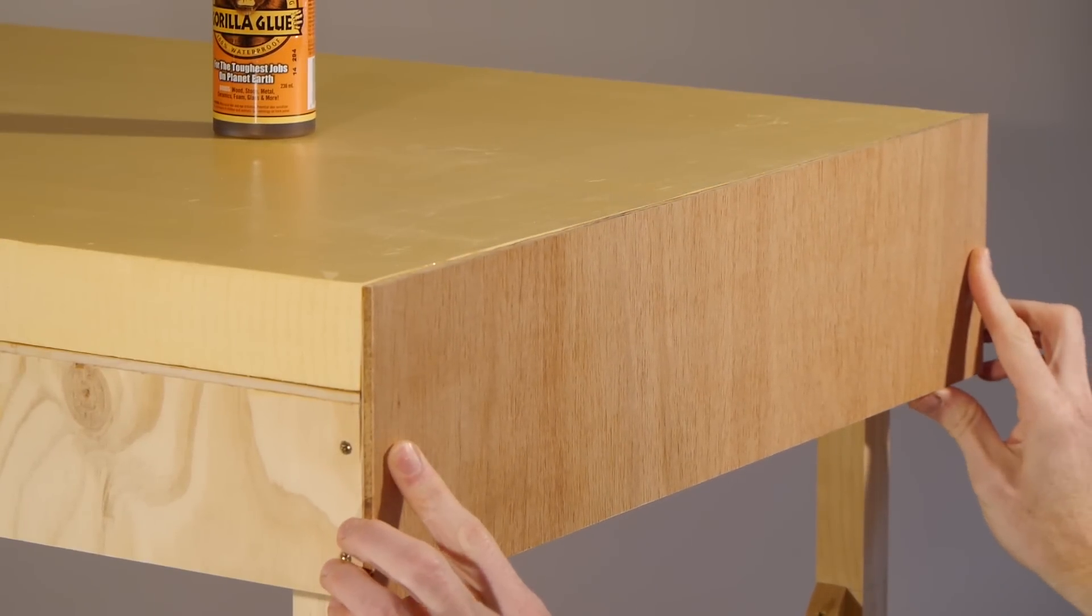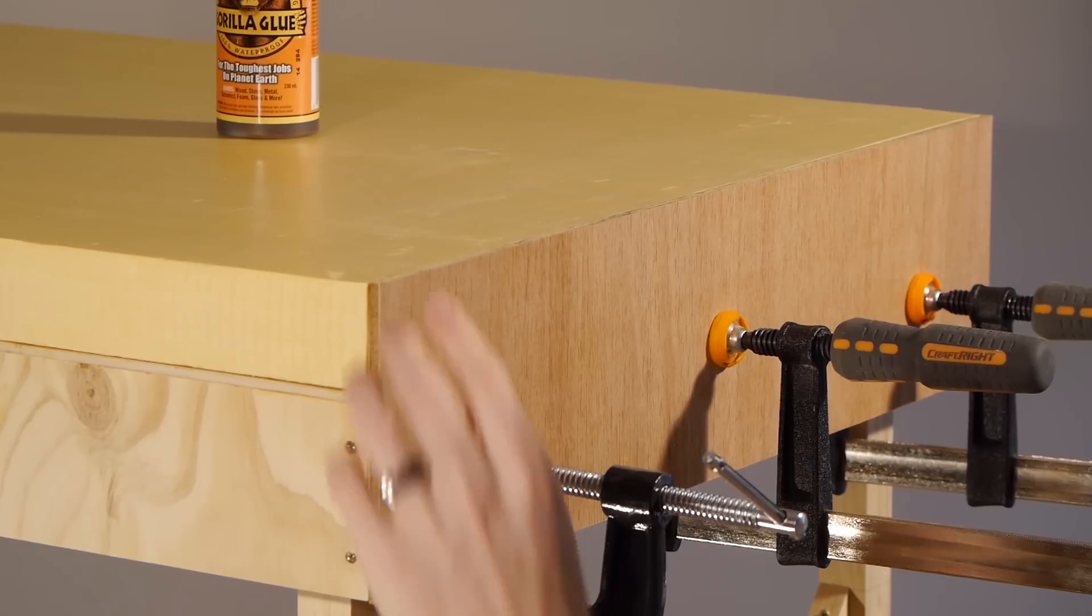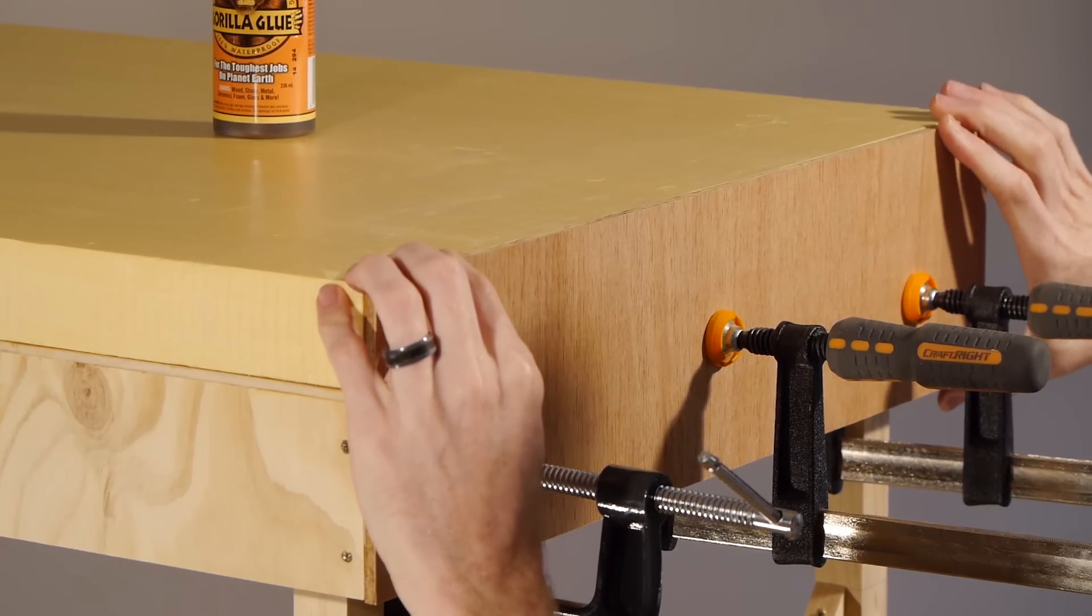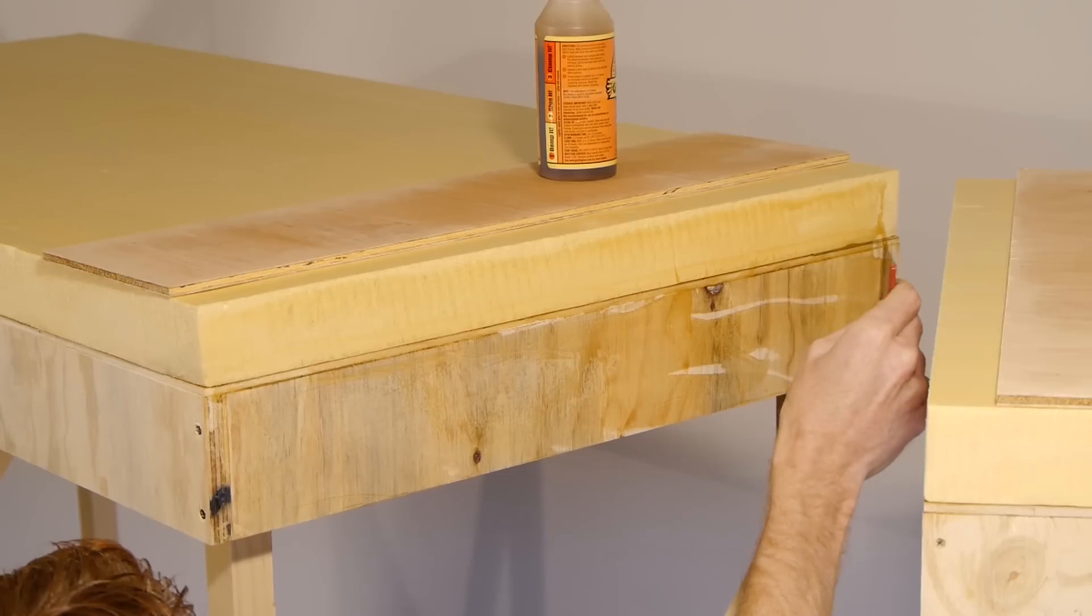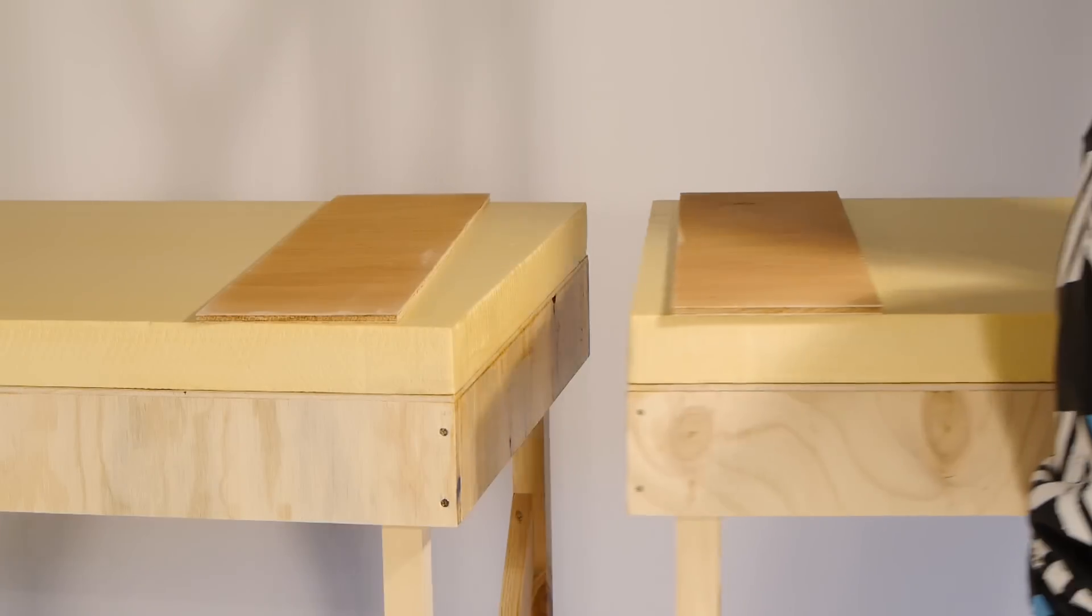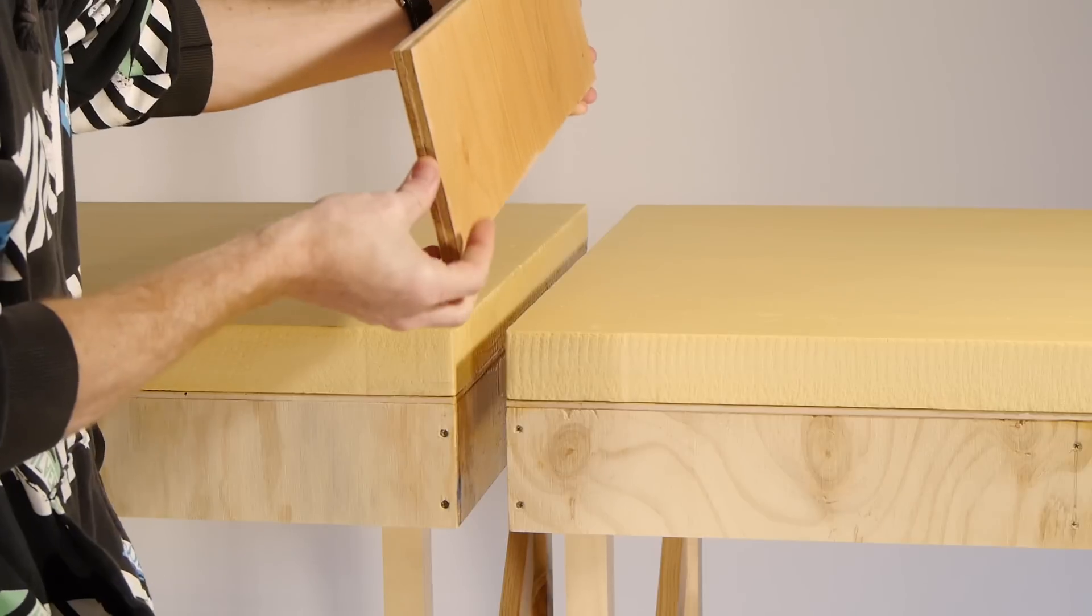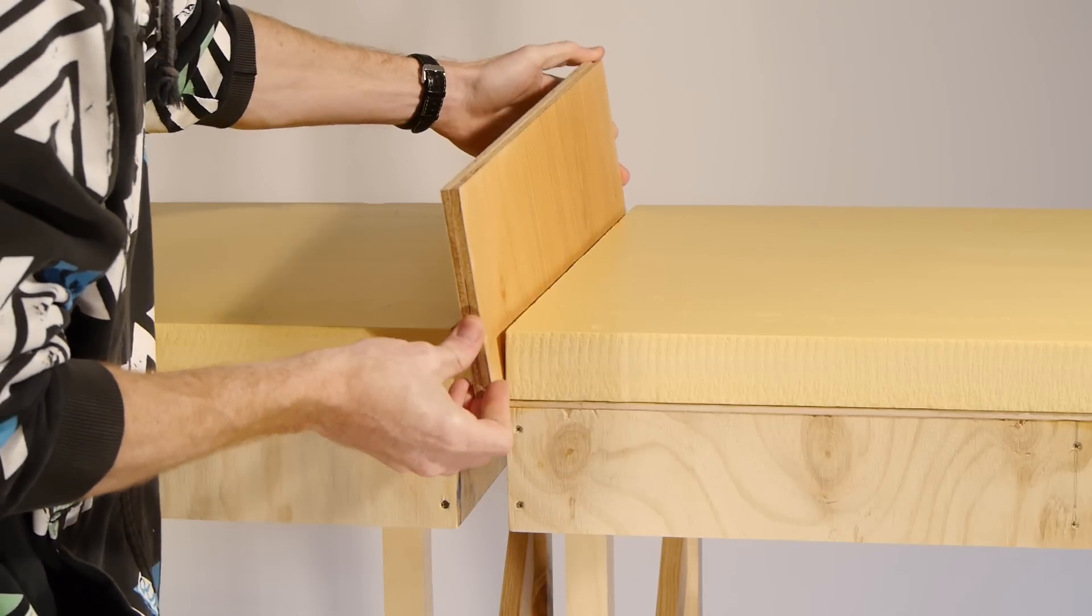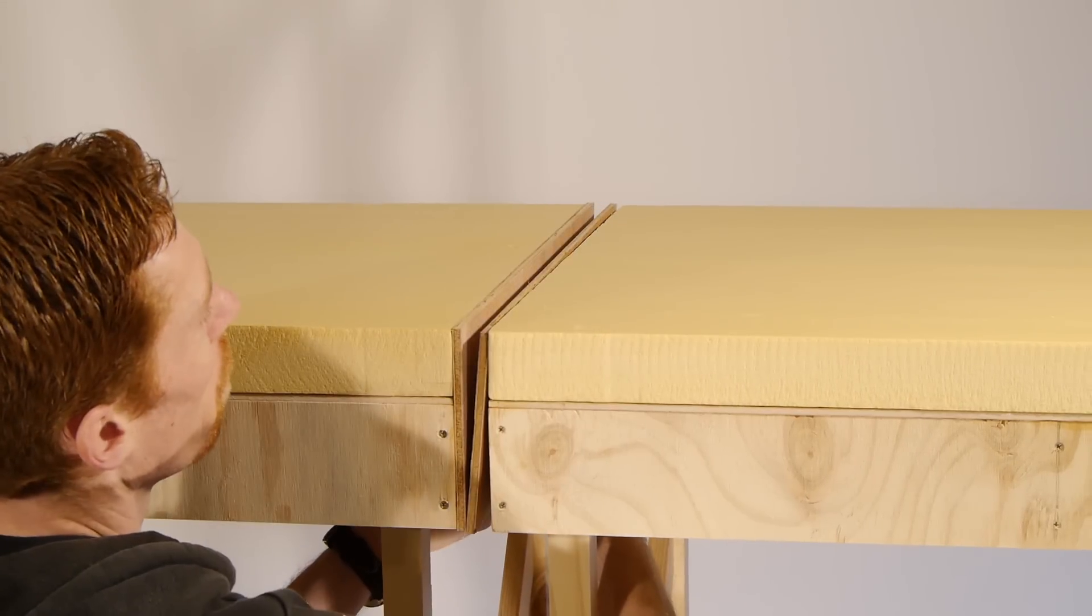I want the top of the plywood to sit as close as possible to the top of the foam. If anything I want it to be slightly higher and not lower. Where the two modules connect I glue the ends in at the same time, clamping both modules together while it dries. This helps get an accurate join between the two modules.